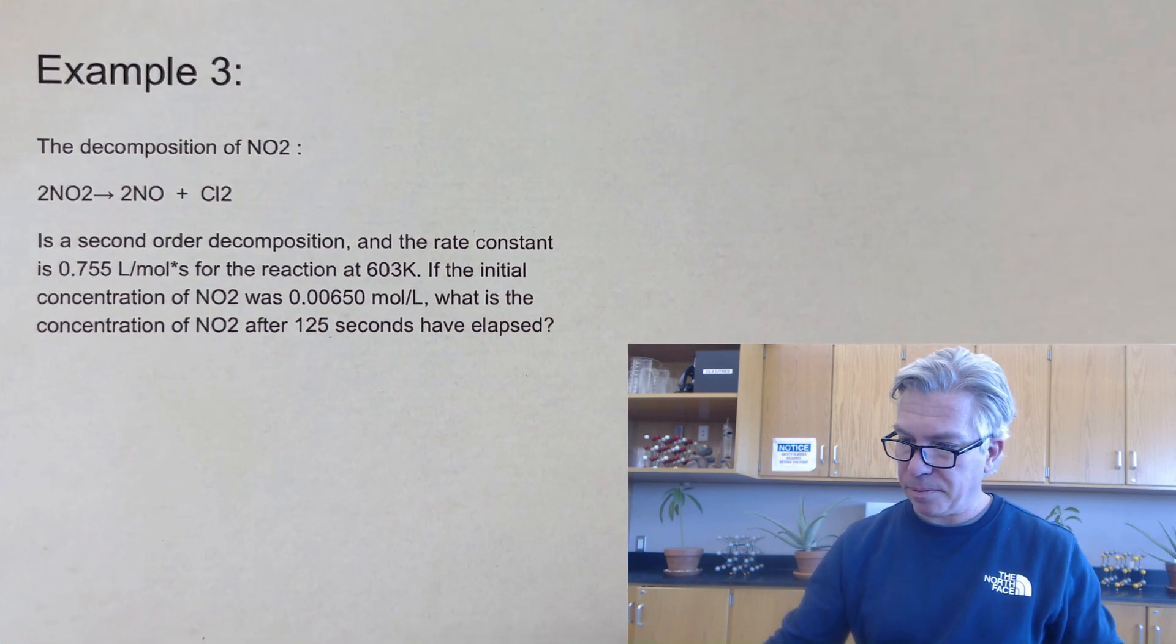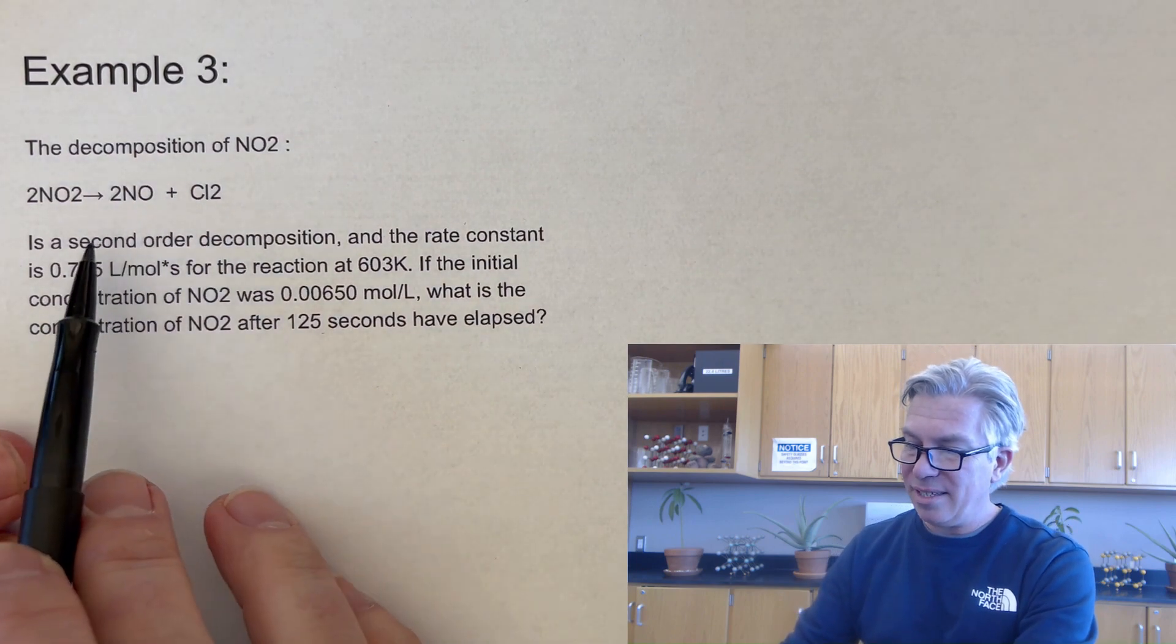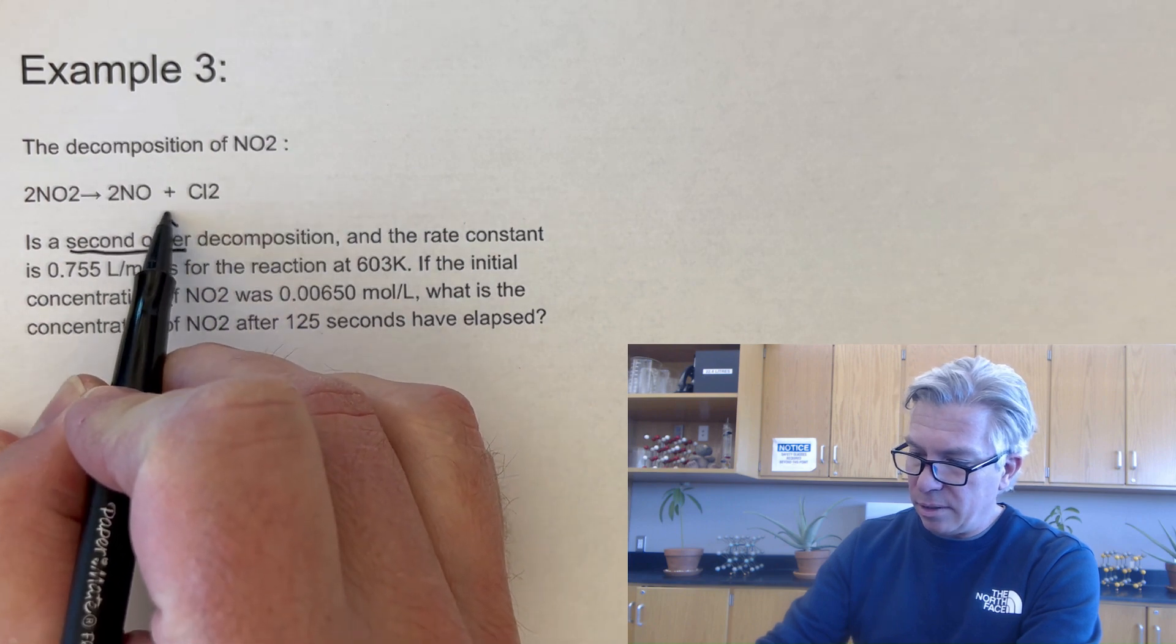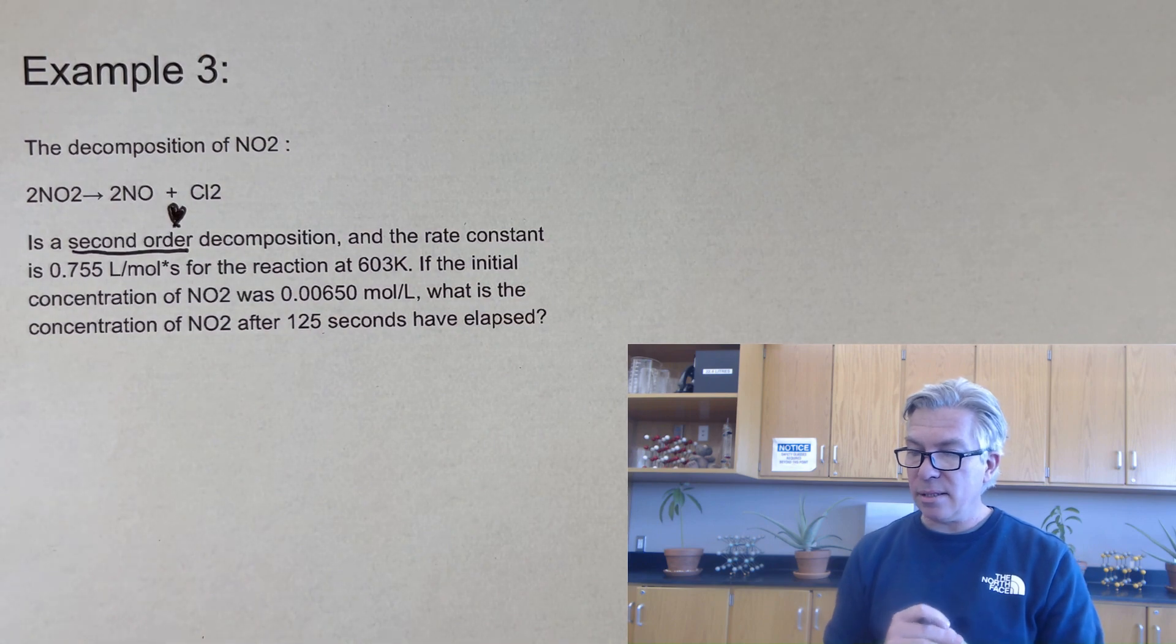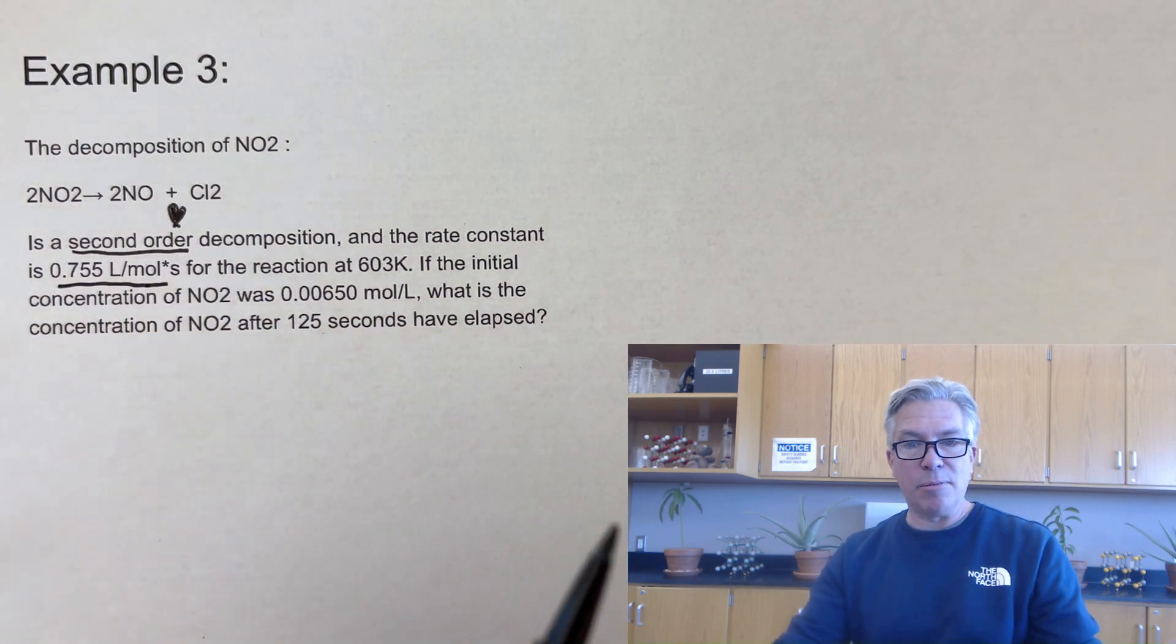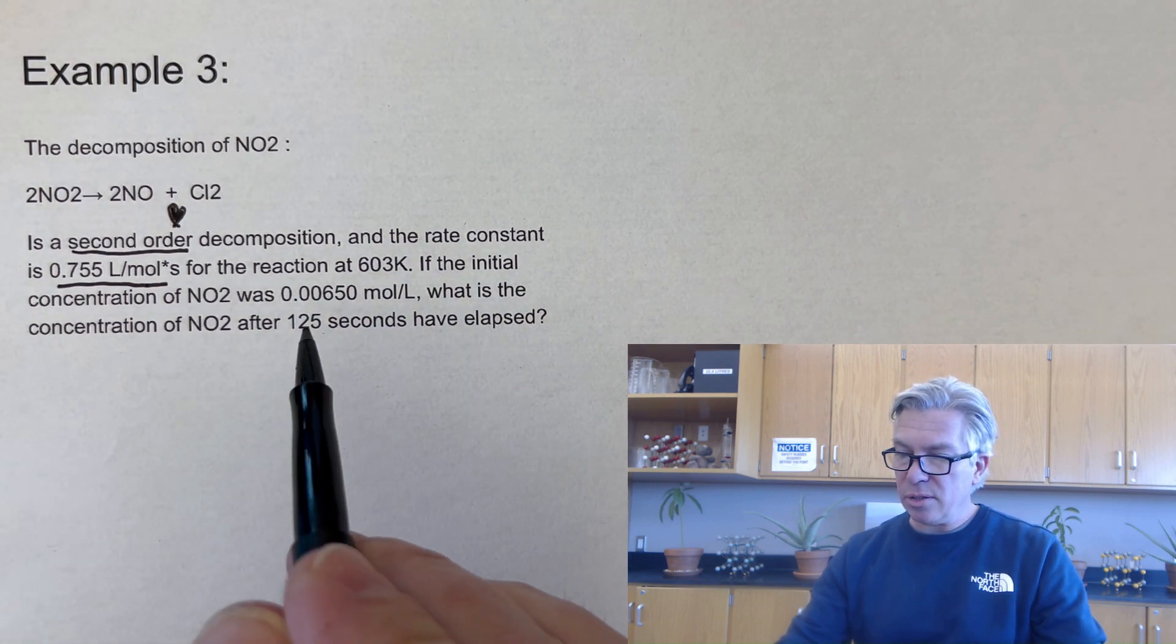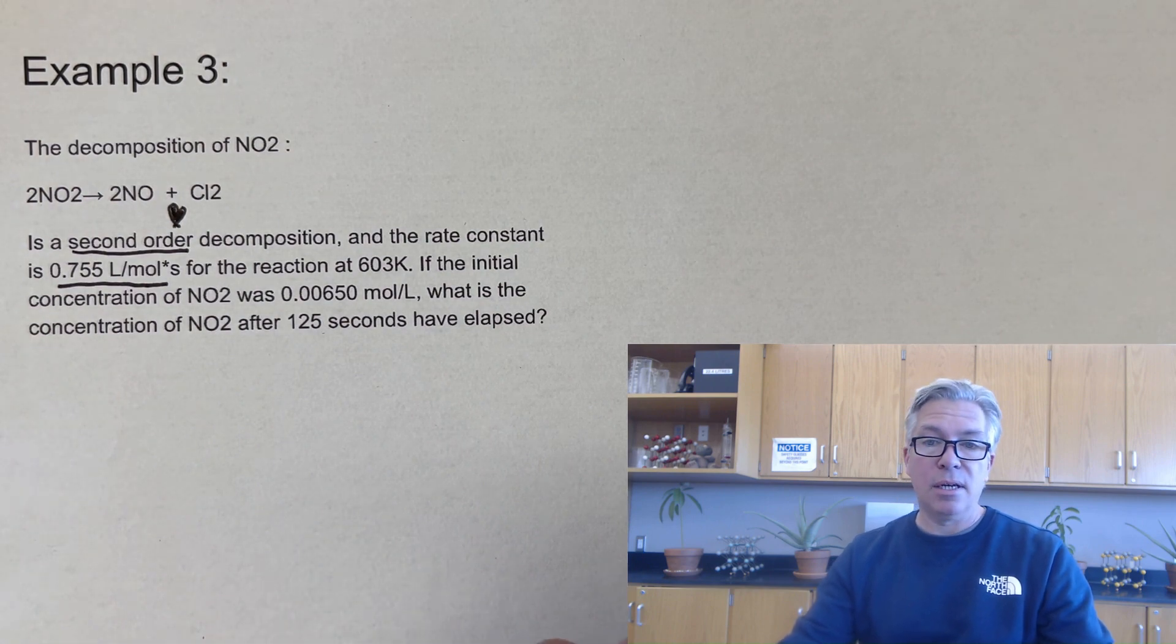All right. Our third example says the decomposition of NO2 is a second order reaction. So great. I already know that it's second order. So yay. And the rate constant is 0.755 liters per mole second. So that's great. They've given me this good information. If the initial concentration was 0.00650, what's the concentration after 125 seconds have elapsed? So again, we're predicting down the line what's going to happen.